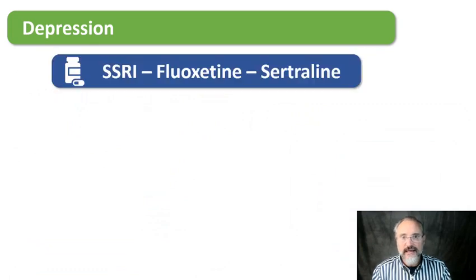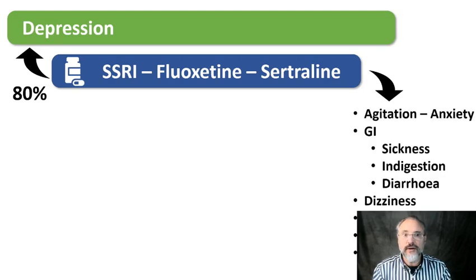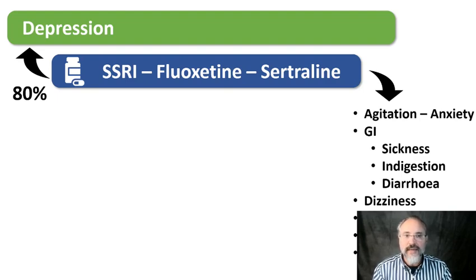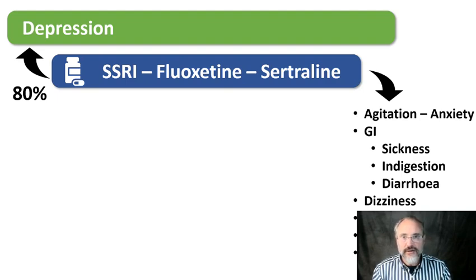The treatment of depression is antidepressants — SSRIs. Stick with fluoxetine and sertraline. They're effective: about 80% of people respond to them, but they have common side effects. There are about 100 million people in the world taking SSRIs. The scary ones are agitation and anxiety. The common ones are gastrointestinal symptoms like nausea, dizziness, loss of appetite, loss of sleep, and effects on sex — both sex drive and capacity for orgasms or erections. That last one people won't often tell their GP unless the GP checks. All doctors prescribe antidepressants, so you need to know this.